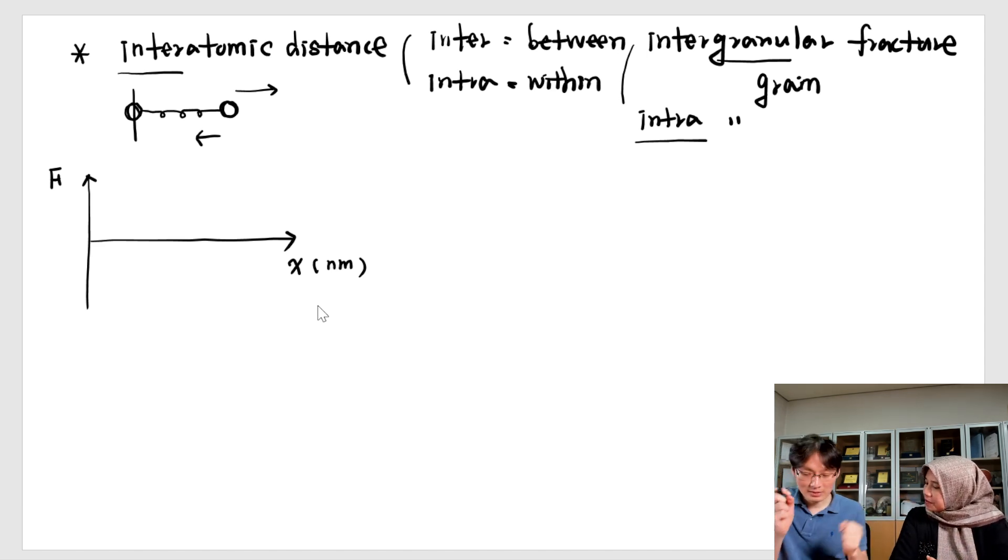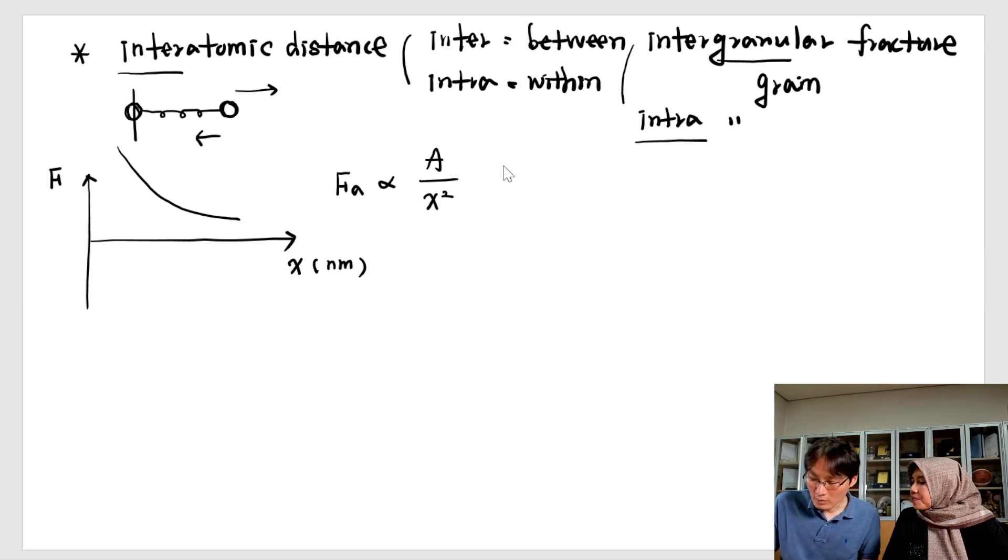So attractive force, it should be the distance square, in arbitrary one, A. So curve should be just like this. This also defined as coulombic force. You must be A, Y, C. It doesn't matter. Another force, it should be the repulsive force. The repulsive force, it should be just like that. X, sometimes this one, A or 9.